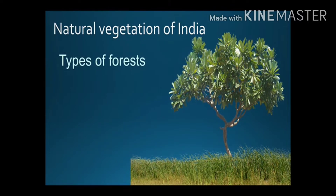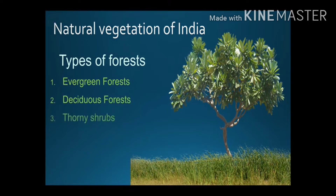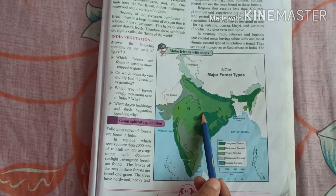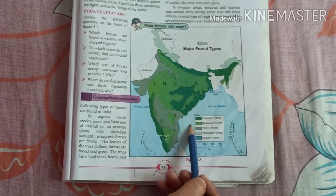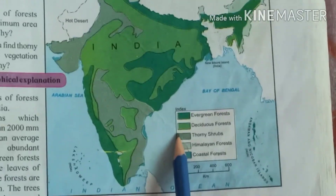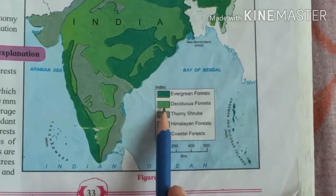There are five types of forest in India: number one, evergreen forest; number two, deciduous forest; three, thorny shrubs; four, coastal forest; and the last, Himalayan forest. Look at the map of major forest types of India — always remember, whenever you are studying a map, you have to see the index properly before studying it.